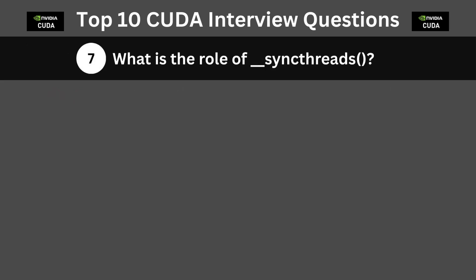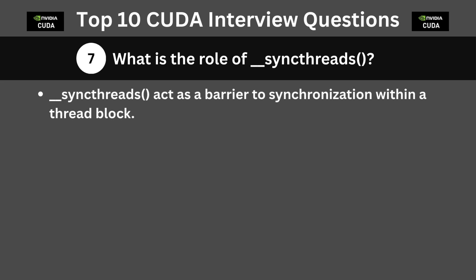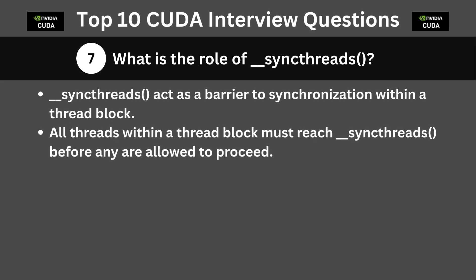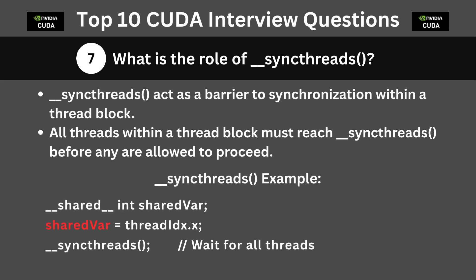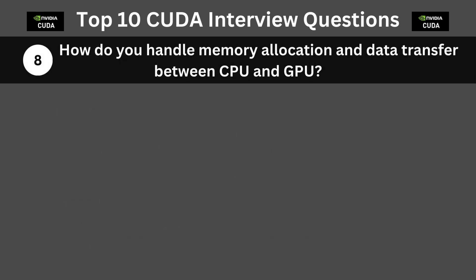The next question is: what is the role of __syncthreads()? Syncthreads acts as a barrier for synchronization within a thread block. All threads within a thread block must reach it before any are allowed to proceed, which is essential when using shared memory to avoid race conditions. In this code snippet, syncthreads ensures that all threads within the same block have updated the shared variable before moving ahead.